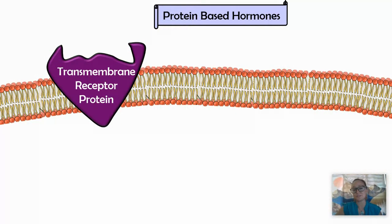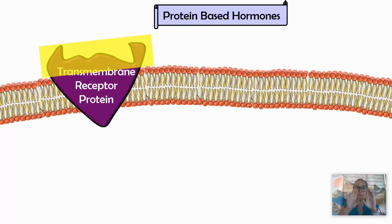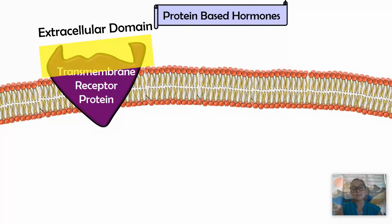Going back to protein-based hormones: because a protein-based hormone cannot cross through the lipid bilayer by simple diffusion, it's going to be received by a transmembrane receptor protein. When I say transmembrane, that means it spans the membrane — it's a membrane protein. The part of the receptor protein that is outside of the cell is called the extracellular domain.